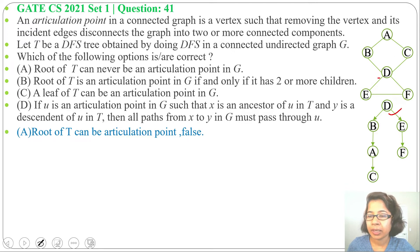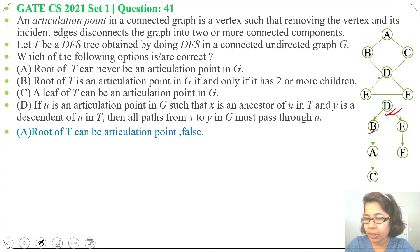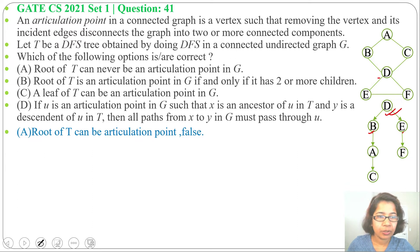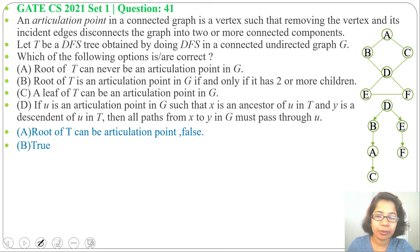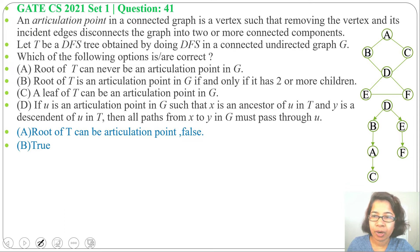Option B: root of T is an articulation point in G if and only if it has two or more children. This is true — D has two children: one is B and another is E. So option B is true.